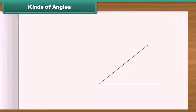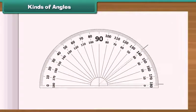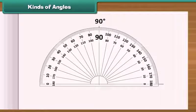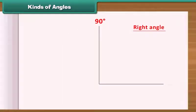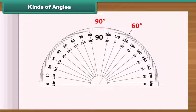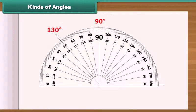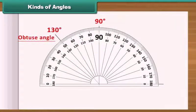An angle can be measured by using a protractor. It is also used in drawing an angle of a given measure. An angle whose measure is 90 degrees is called a right angle. An angle whose measure is less than 90 degrees is called an acute angle. An angle whose measure is more than 90 degrees is called an obtuse angle.